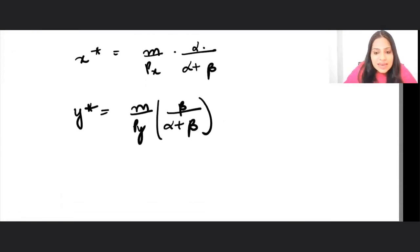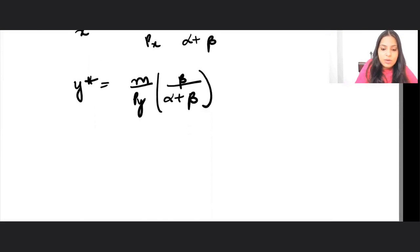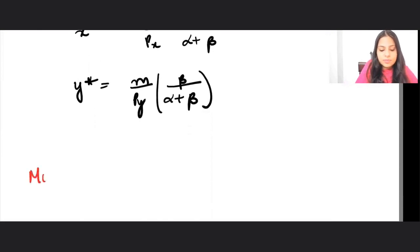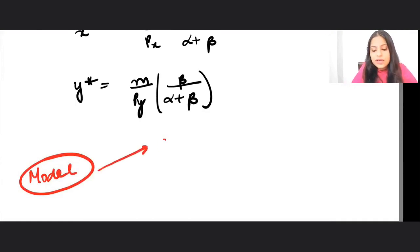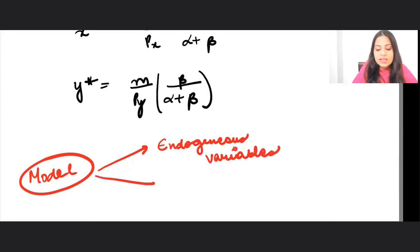See, in any model that we talk about, there are two main things that are there in the model. One is known as endogenous variable and the other is known as exogenous variables.